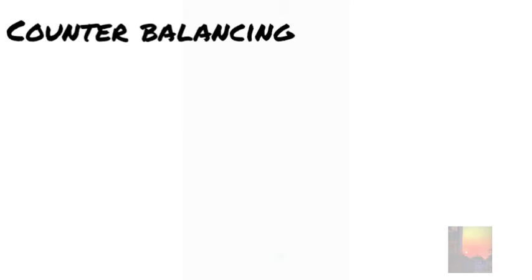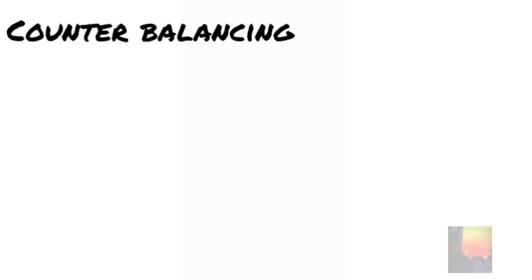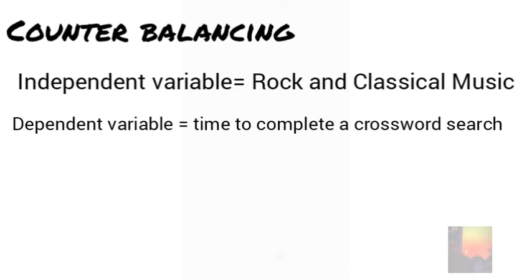To make it easier, let me give you an example. In an experiment, the aim is to investigate the effect of two different types of music on concentration using repeated measure design. The participants are given a crossword search and they are made to listen to rock and classical music. Basically the experimenter just wants to see which music helps you solve the crossword search faster.